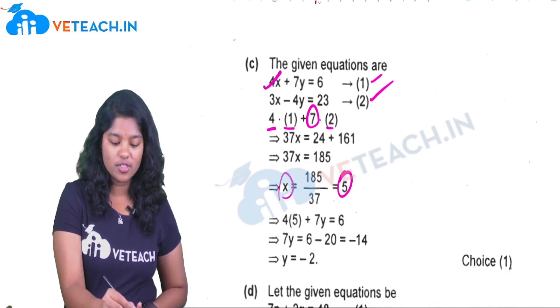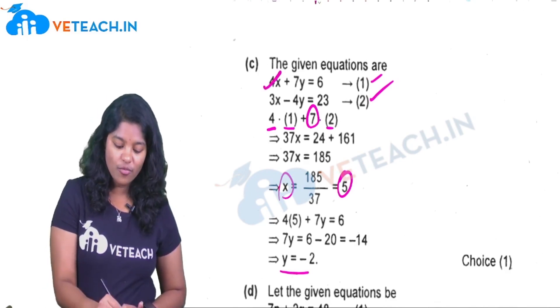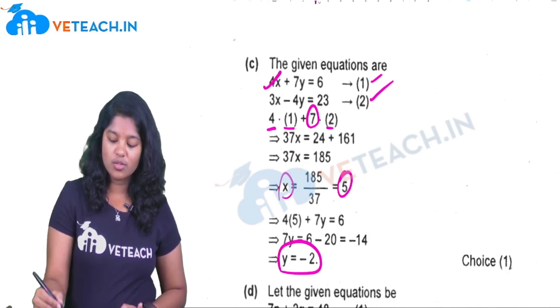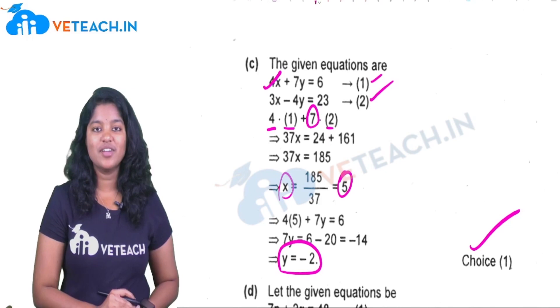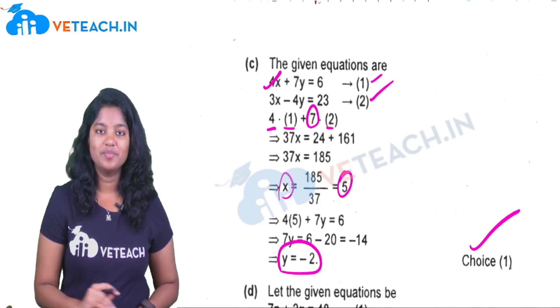Now, put x is equal to 5 in the first equation — we get y is equal to minus 2. So, choice 1 is our correct answer.